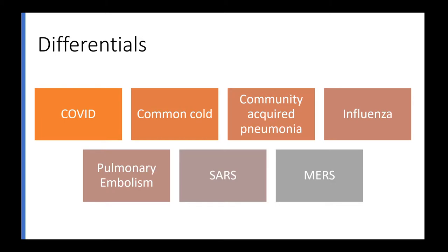For him, given that he has cough, fever, shortness of breath, type 1 respiratory failure, and sinus tachycardia, his top differential at that time was COVID because he came in at the peak of COVID. But before COVID, the most common differentials would have been common cold, influenza, or CAP. It's important to exclude PE as well because he was in type 1 respiratory failure and was sinus tachycardic.